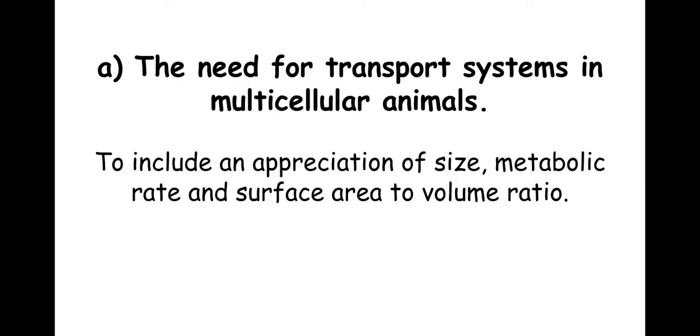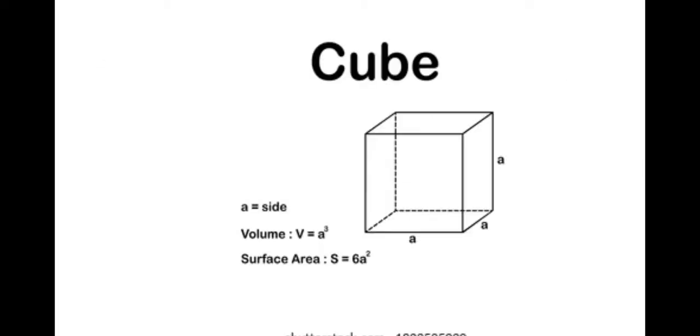Welcome biologists. This first specification point on transporting animals, we're going to be looking at transport systems and why a multicellular organism, such as a human, needs a transport system, such as a circulatory system. And the reason for this, and what we're going to be looking into today, is the surface area to volume ratio.